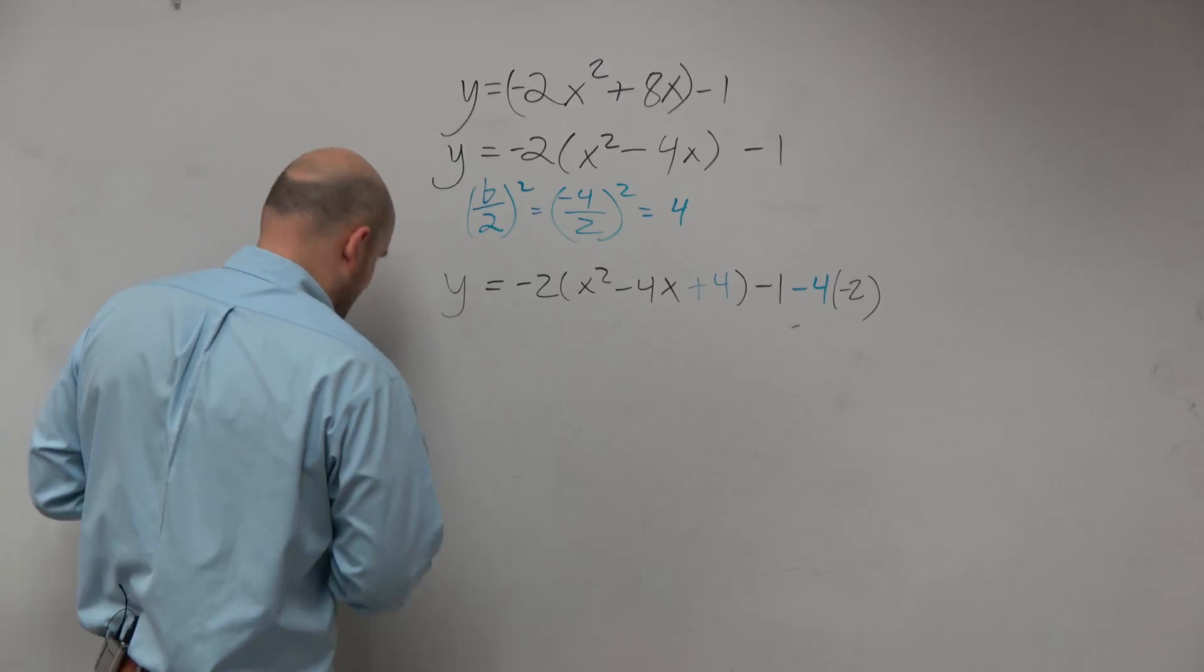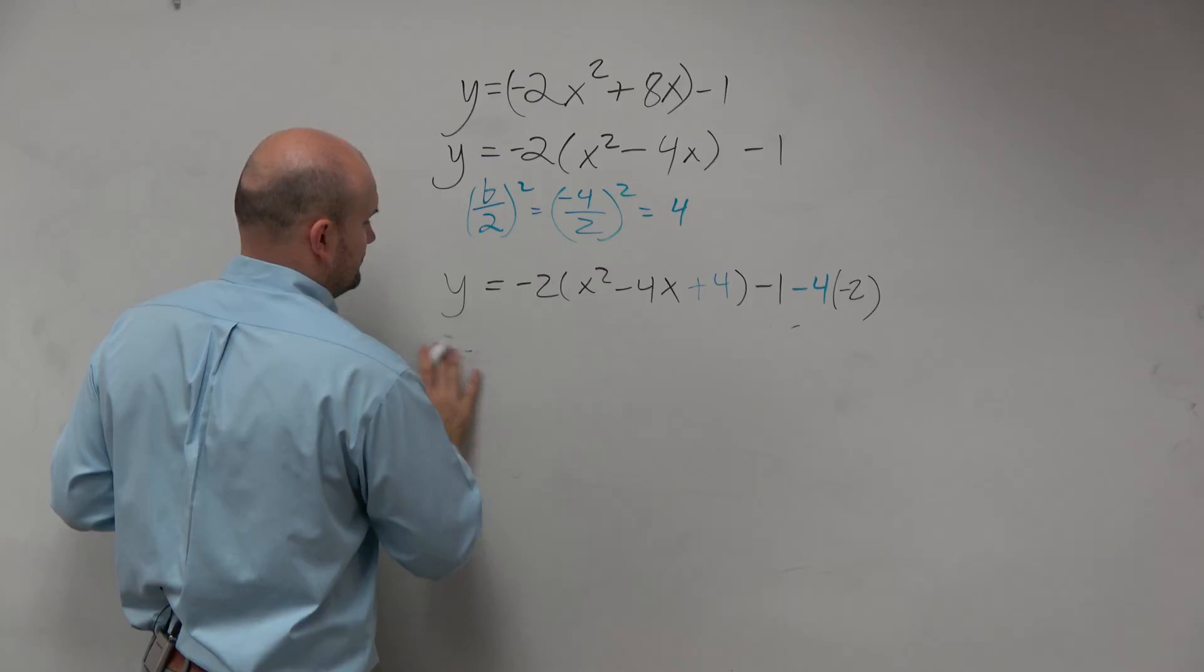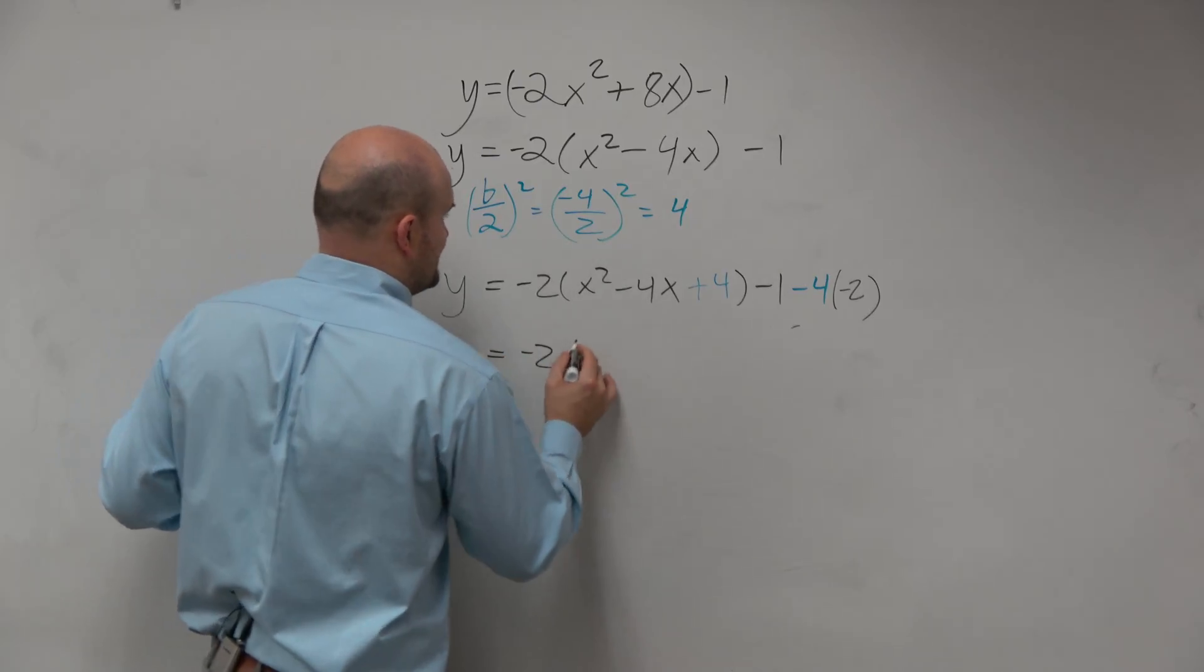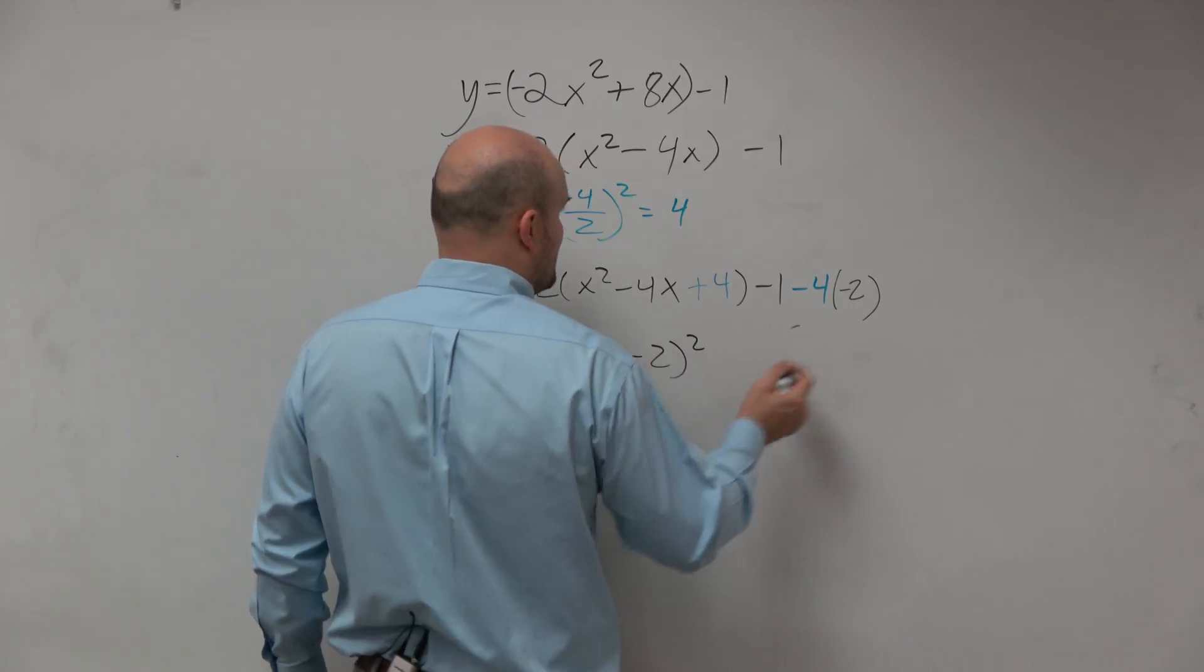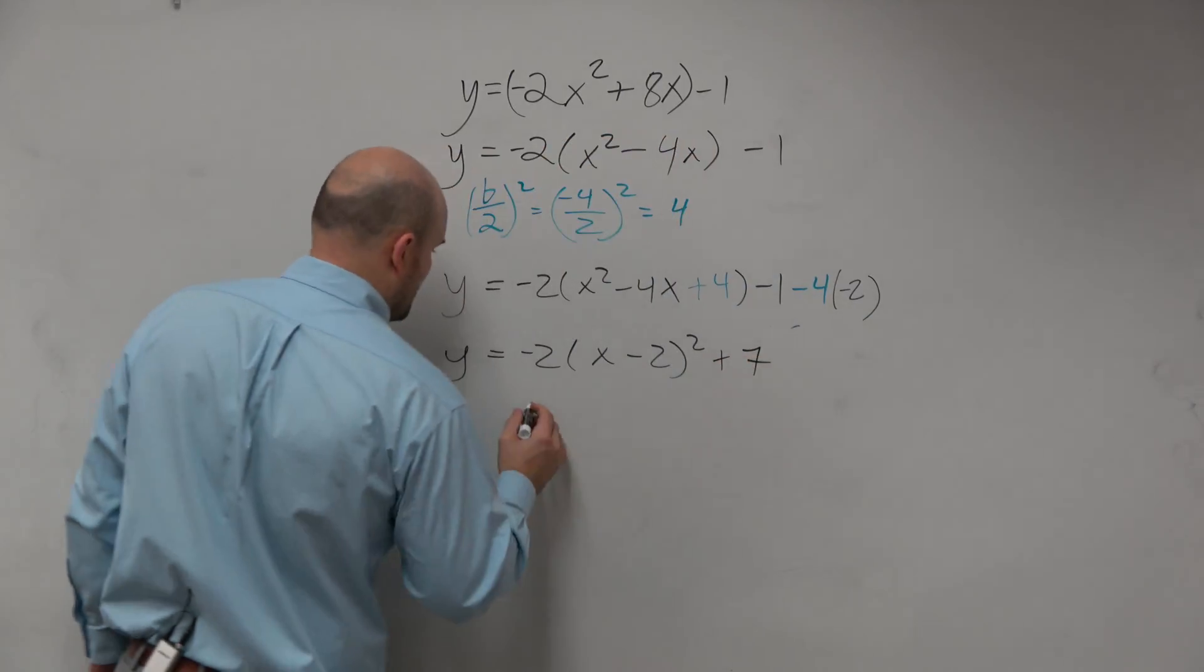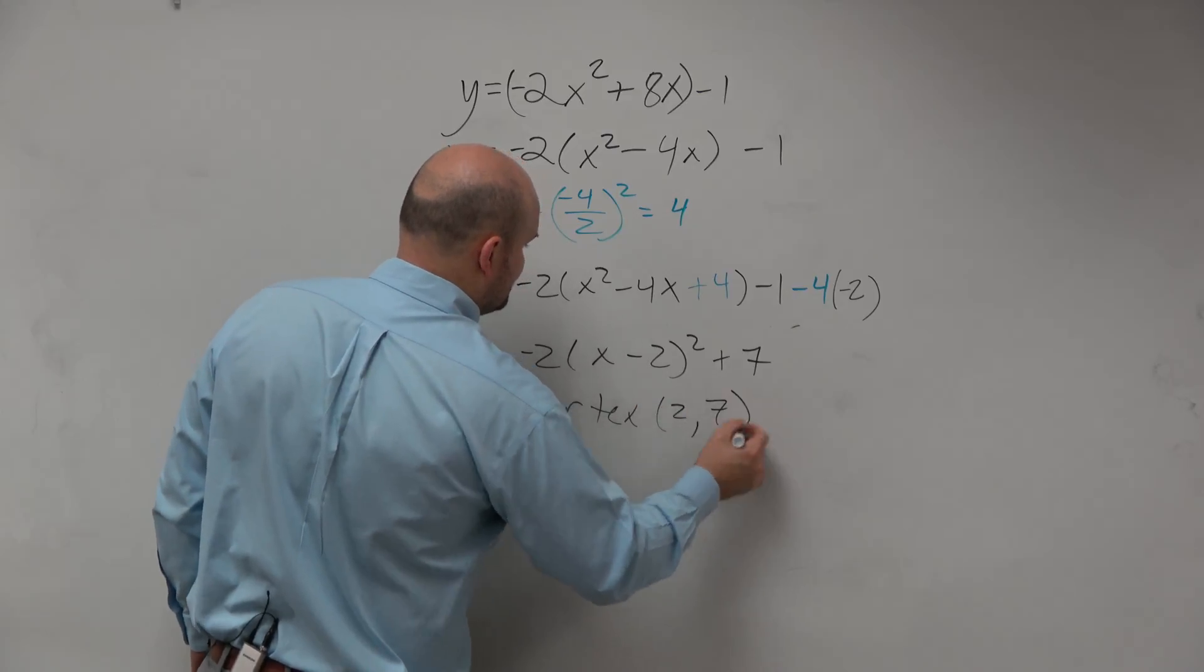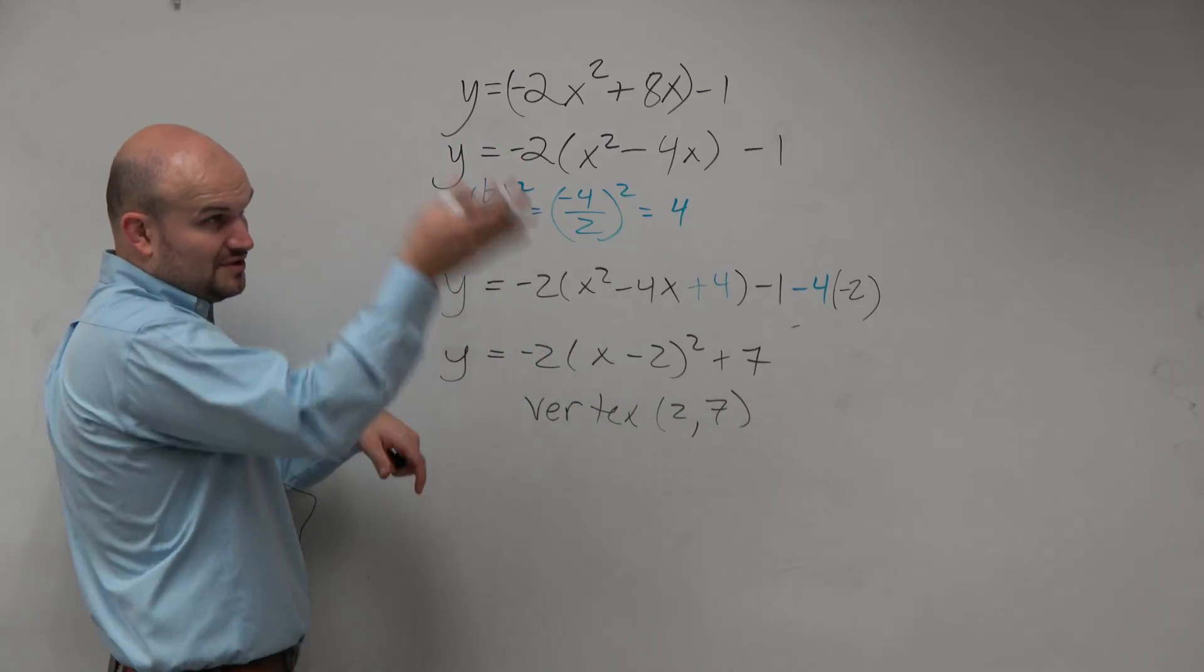So let's go ahead and do that. So y equals negative 2 times x minus 2 squared. Negative 2 times negative 4 is positive 8 minus 1 is going to be a positive 7. Vertex is going to be 2 comma 7. And you can see that's a negative, so it goes down. So therefore, that's an absolute max.